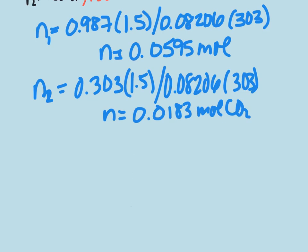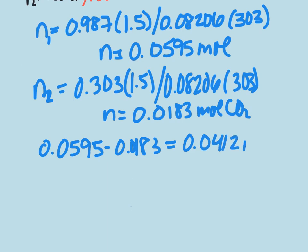So to figure out how many moles were used in the reaction, we're going to subtract the remaining moles from our initial moles. 0.0595 minus 0.0183, and we get that 0.0412 moles of CO2 were used in the reaction.